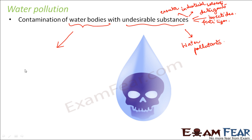What do we mean by contamination of water bodies? Water bodies can refer to anything like lakes, rivers, oceans, or ponds. Any of these can get contaminated by undesirable substances, and that's how the water becomes polluted. It becomes extremely harmful and unsuitable for drinking, cooking, and bathing.